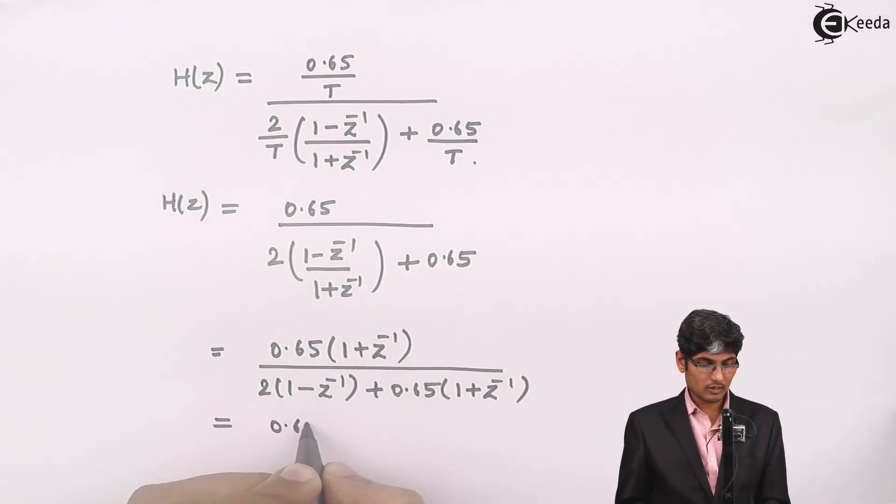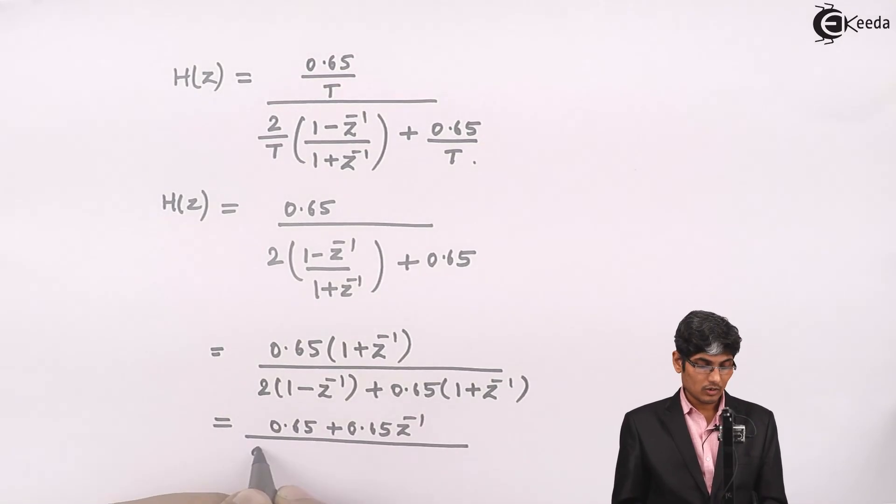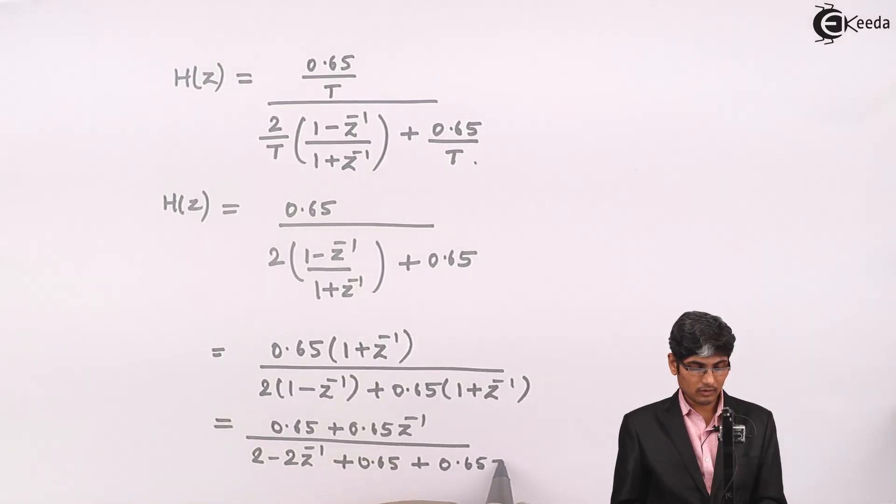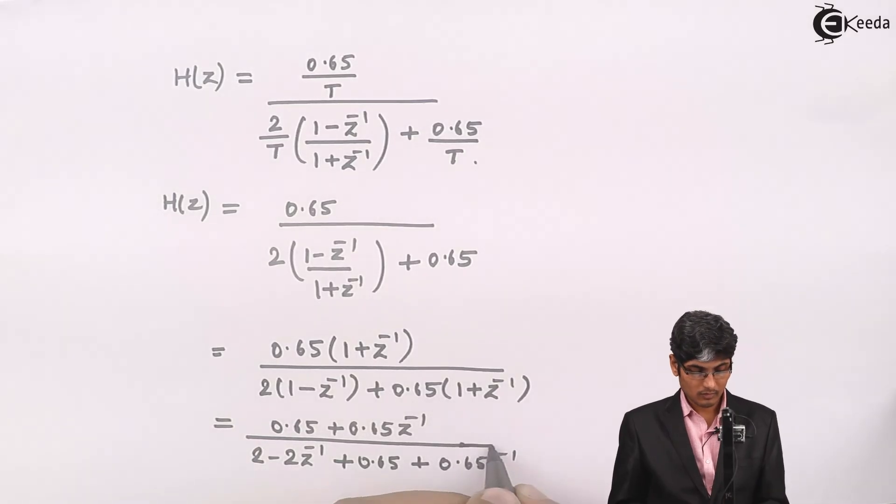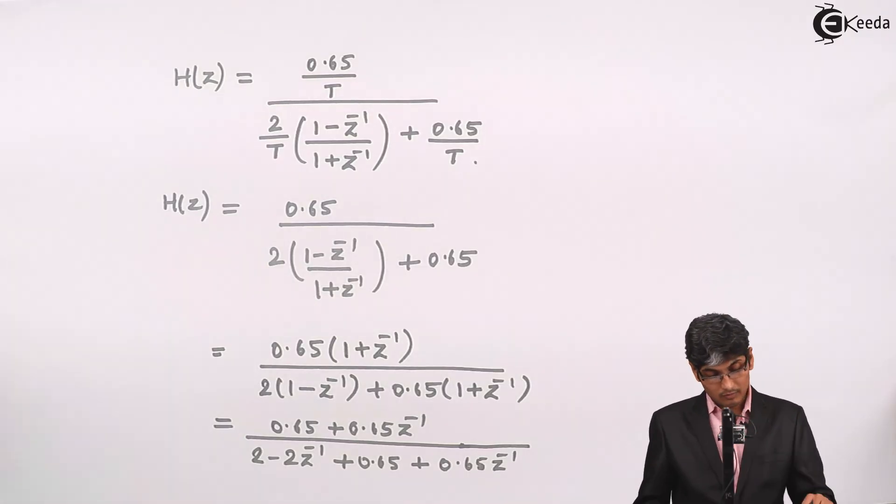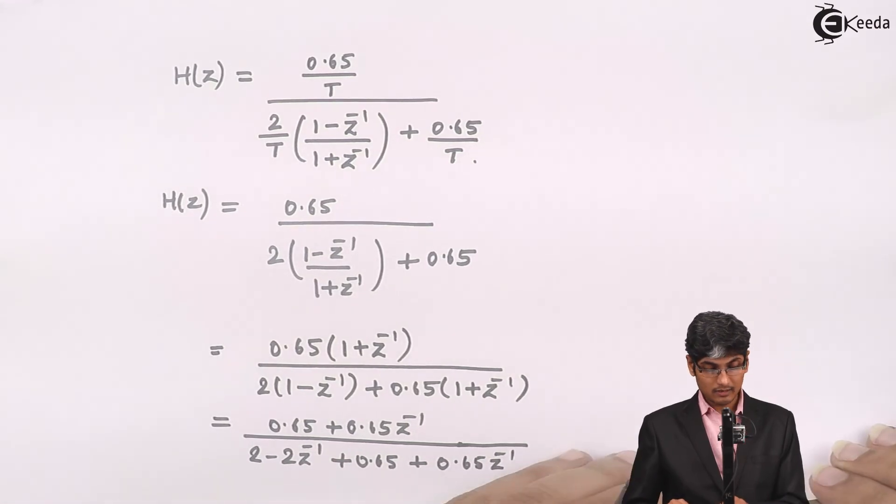So I can write it as (0.65 + 0.65z⁻¹) divided by (2 - 2z⁻¹ + 0.65 + 0.65z⁻¹). We need to solve this further and get the final answer.